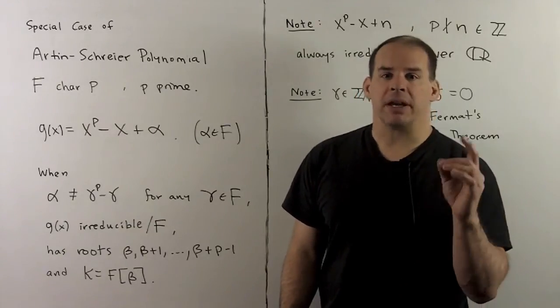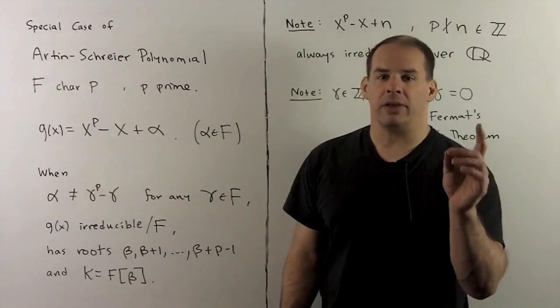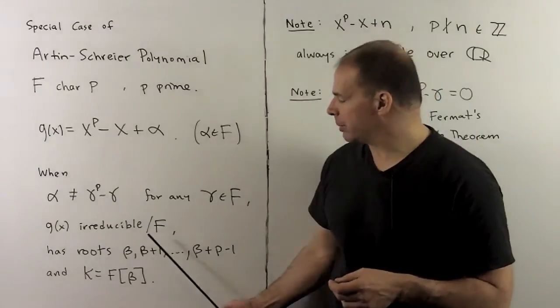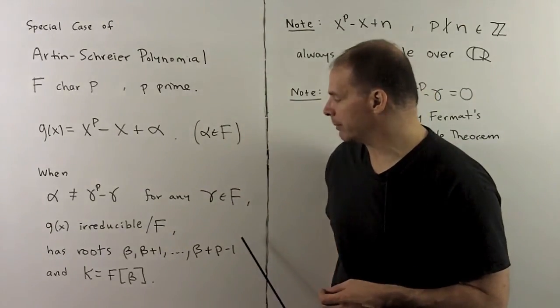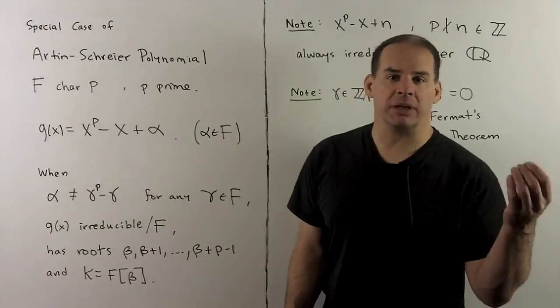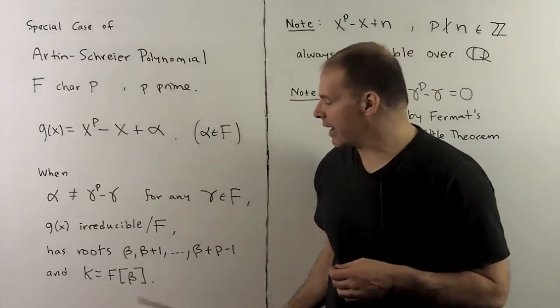For the roots of g, if I can find one root beta, then the others are in the form beta plus one, beta plus two, all the way up through beta plus p minus one. Then we have that the splitting field for g over F is just F adjoined beta.